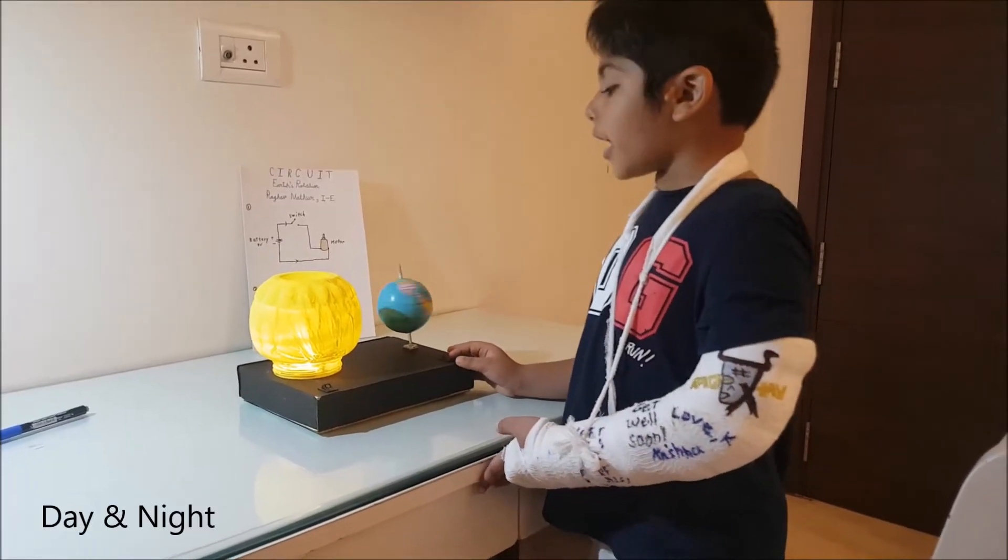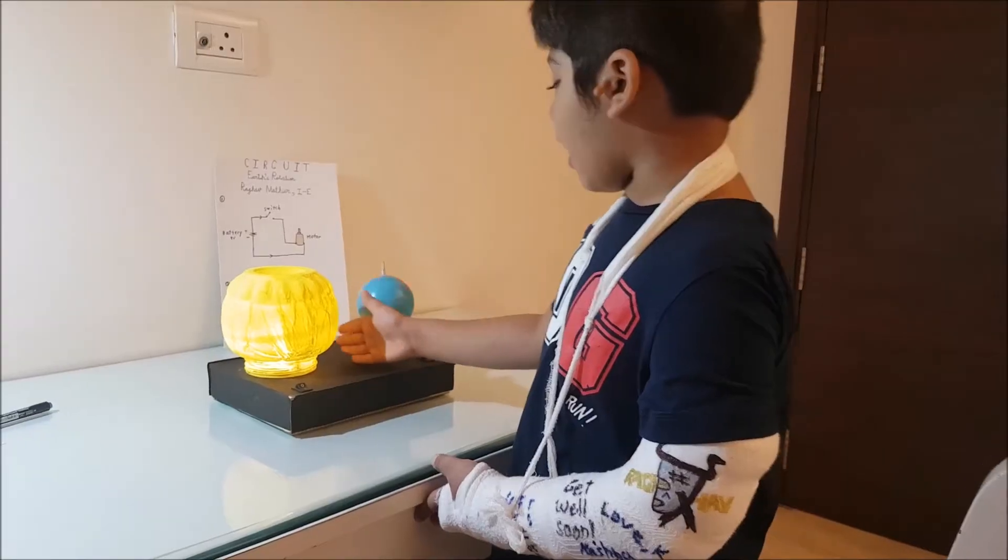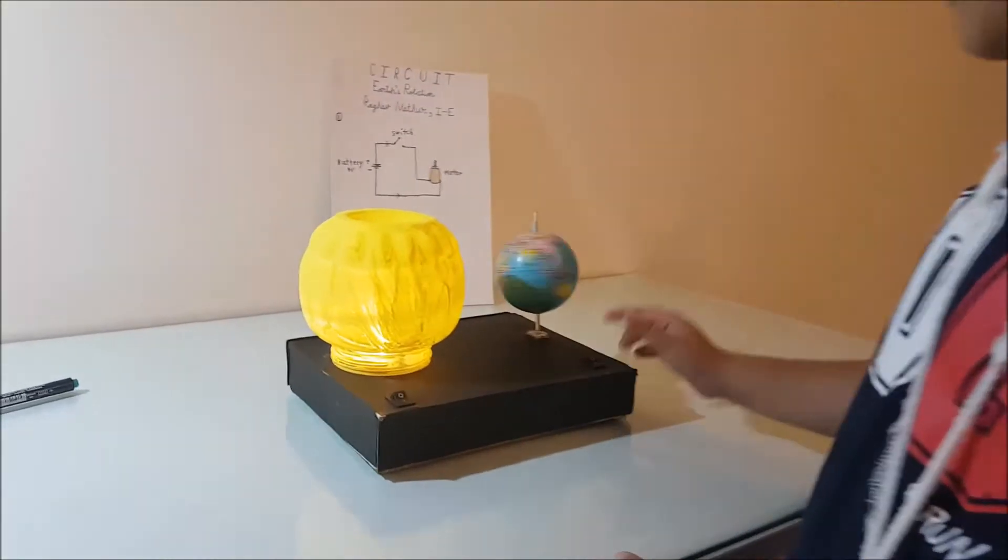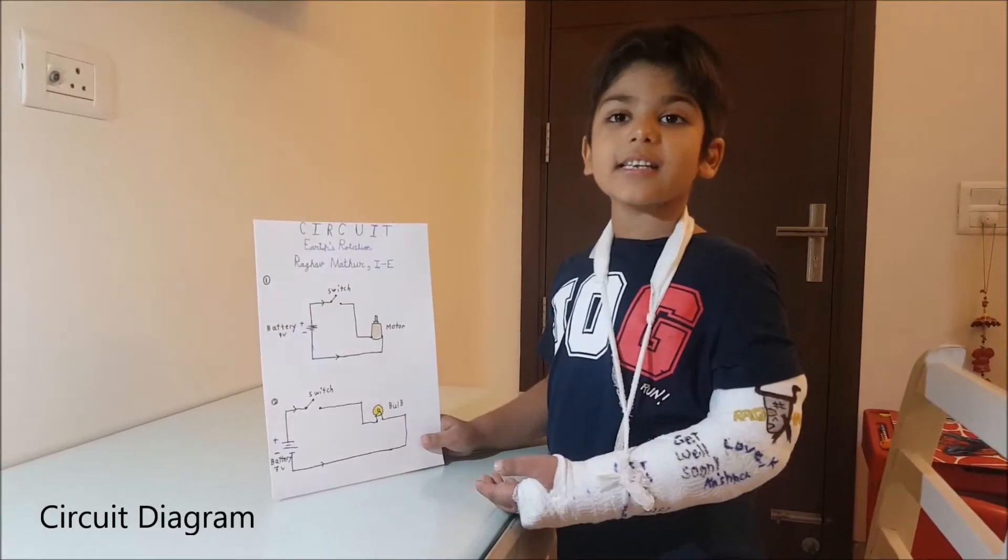This is the Earth's rotation. One part facing the sun has day and the other has night. Let me explain the circuit diagram.